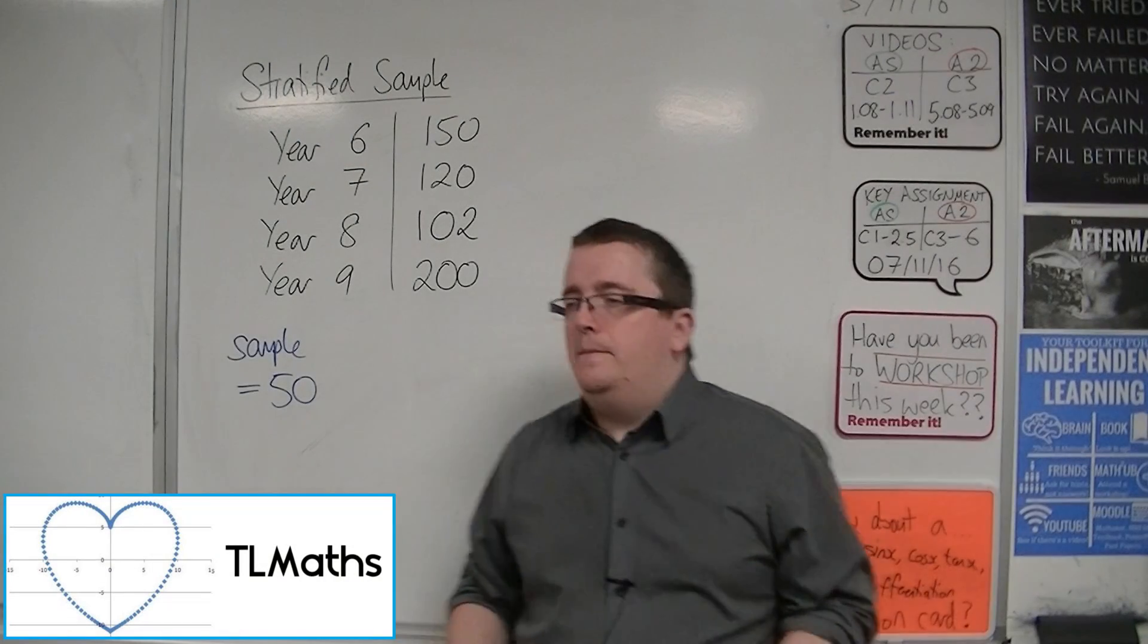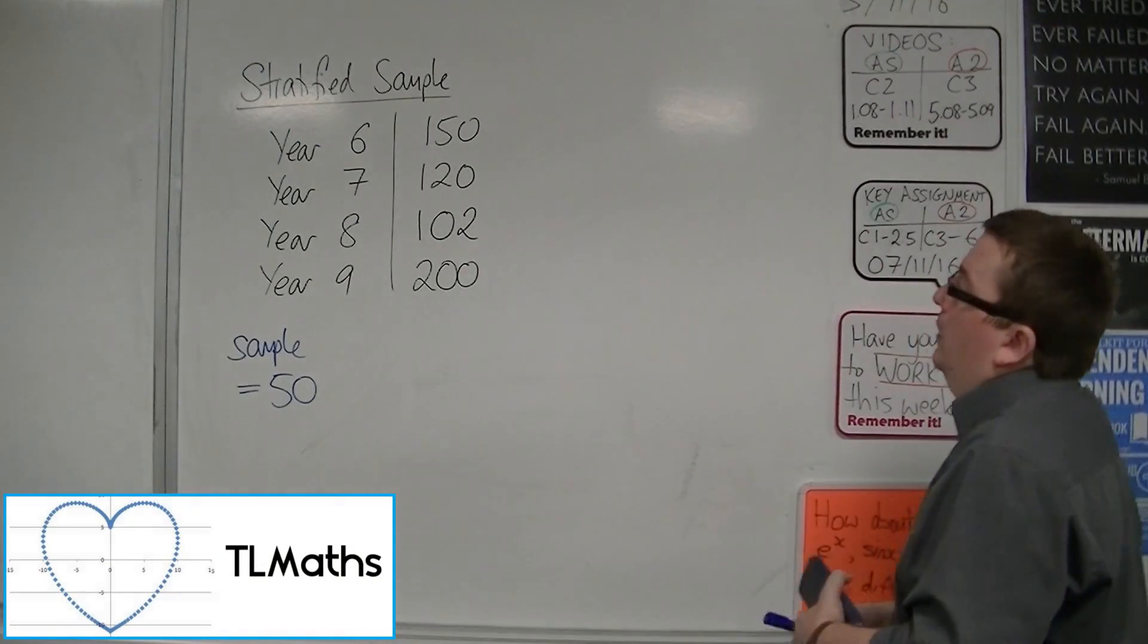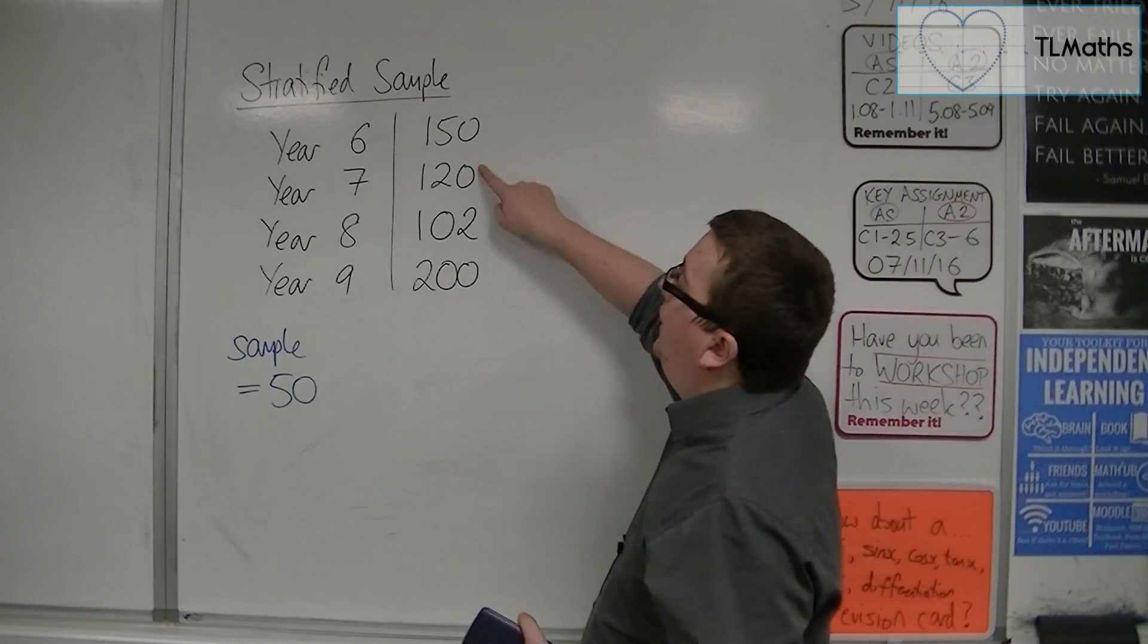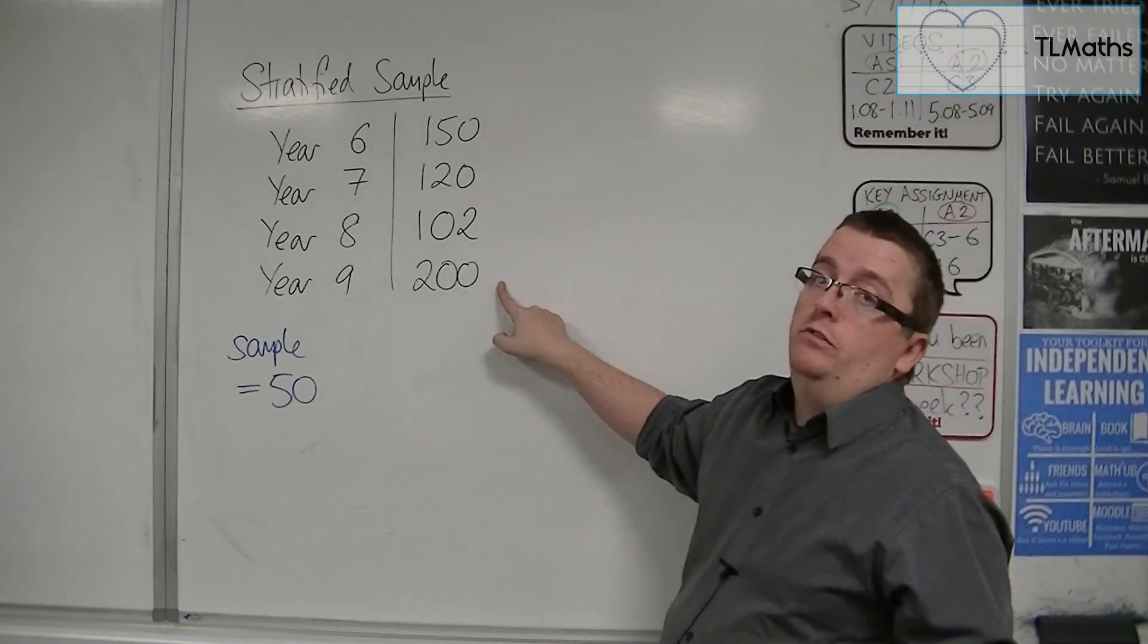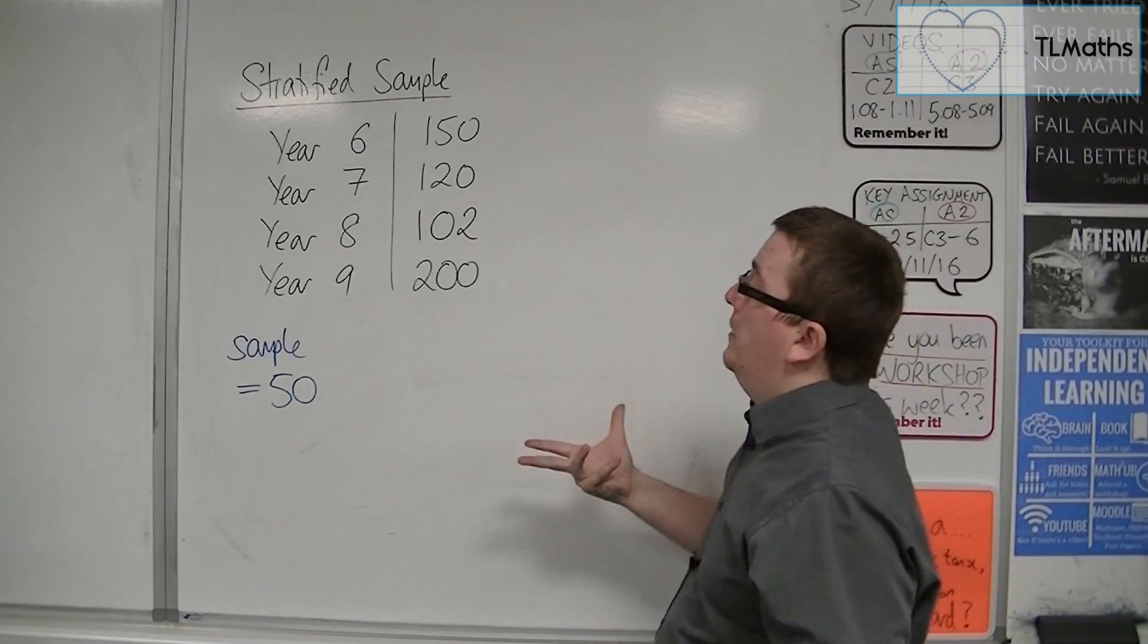Okay, let's say in a school, these are the numbers of students in each of four year groups. Year 6, year 7, year 8, year 9.